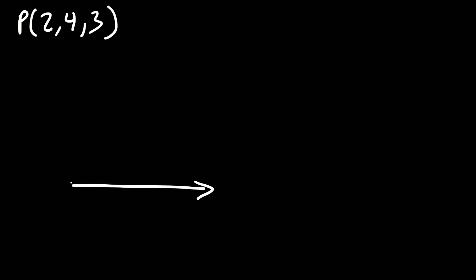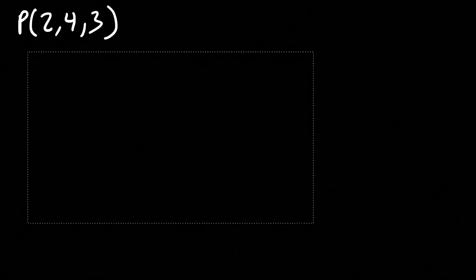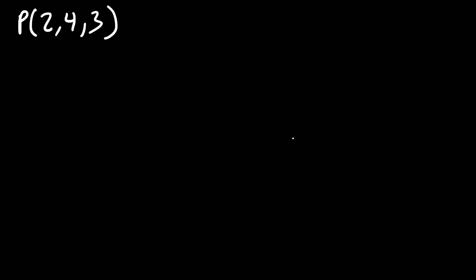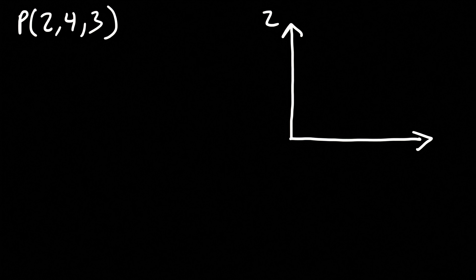Most of you are familiar with this graph — the x-axis and the y-axis. Now for a three-dimensional coordinate system, it's going to be a little different. We have the y-axis, the z-axis, and the x-axis is sort of coming towards you. To plot the first point, we need to know what x, y, and z are.